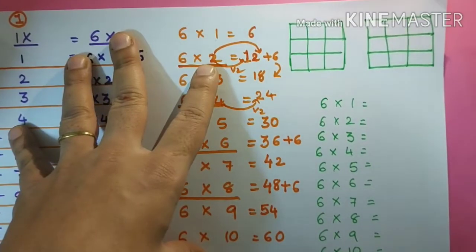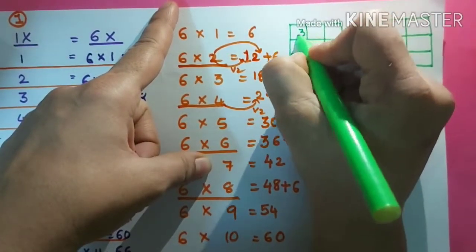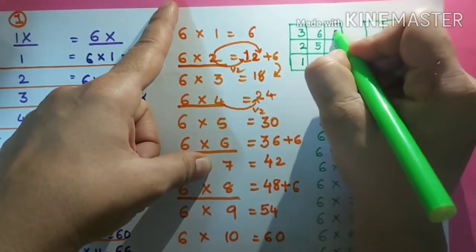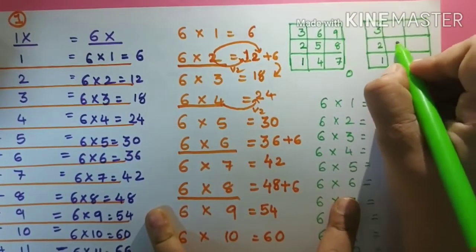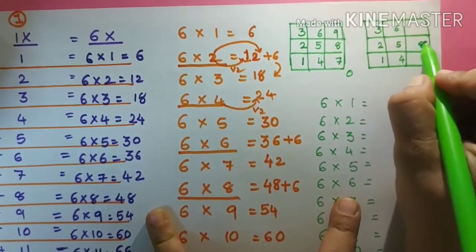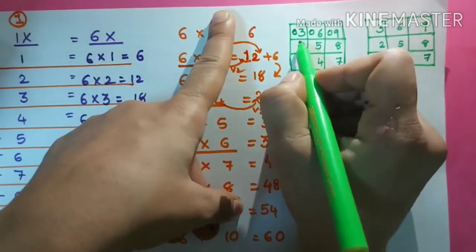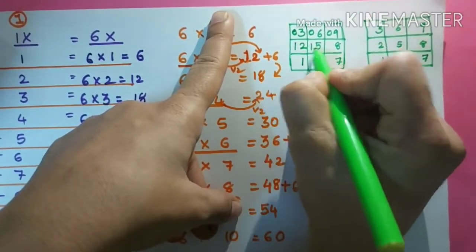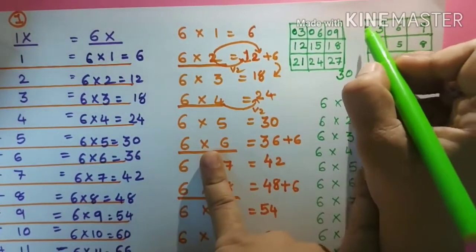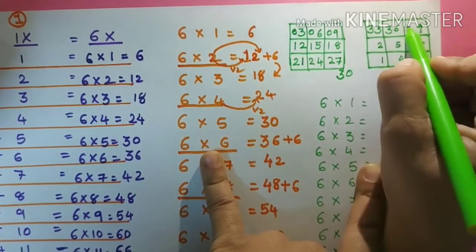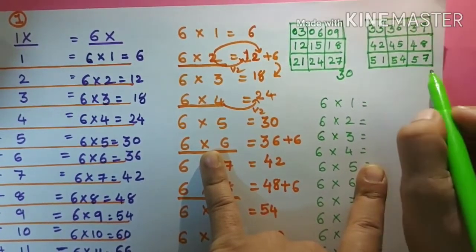Now move on to the third method. It is very easy and a little bit similar to the table of three. Write down 1, 2, 3, 4, 5, 6, 7, 8, 9, and 0 — exactly like the table of three. Again write 1, 2, 3, 4, 5, 6, 7, 8, 9. In the first row write zero, zero, zero. In the second row write one, one, one. In the third row write two, two, two. Then three, three, three; four, four, four; five, five, five; and after five, six.